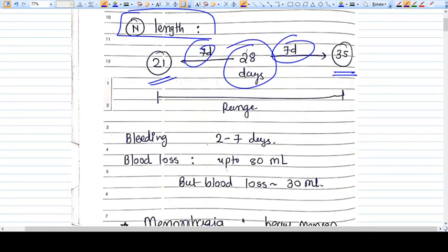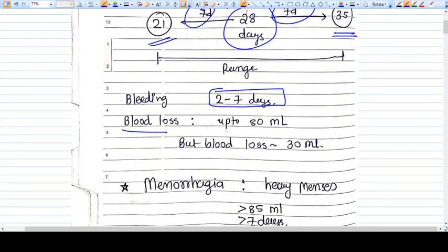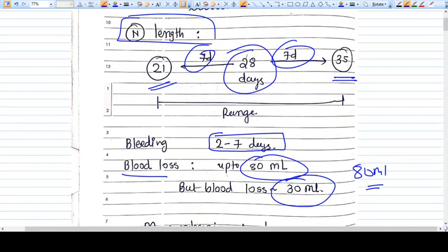What is the normal range of bleeding? 2 to 7 days. What is the blood loss? Up to 80 ml. What is the normal average? 30 ml. But we consider it normal up to 80 ml of blood loss. So this is the normal menstruation cycle.